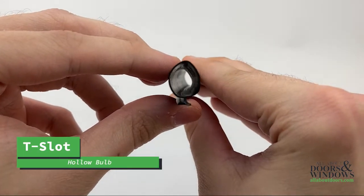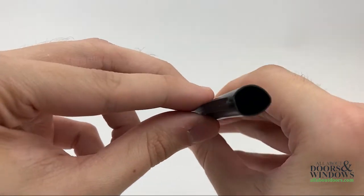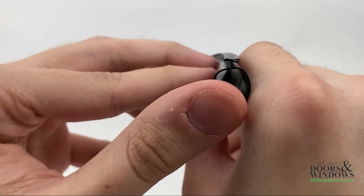T-slot is next, and you can tell it's a T-slot by the backing resembling the shape of a T. It is typically found in vinyl and aluminum windows.